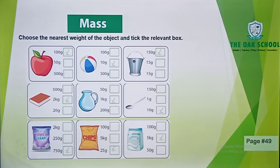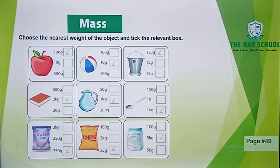This is like a bucket. The weight of the bucket is written in the workbook. The weights are 150 grams, 15 grams, or 1.5 grams. So your bucket's weight is nearly 150 grams, so you have ticked it in the box.